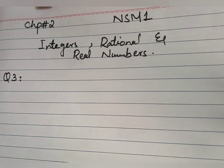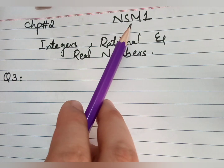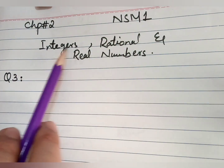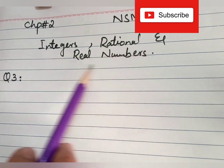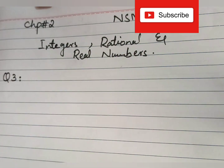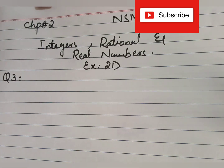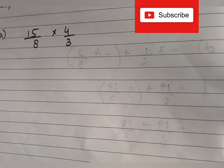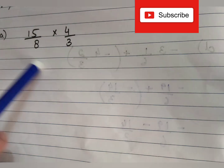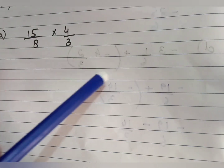Assalamu alaikum, welcome to Mathematics Prime students. Today I'm here with Chapter 2, NSM 1 — Integers, Rationals and Real Numbers — Question 3 of Exercise 2D. So here is Question 3, Part A.